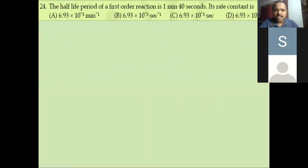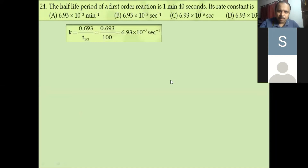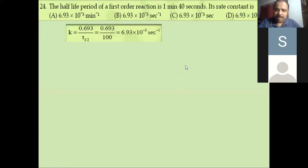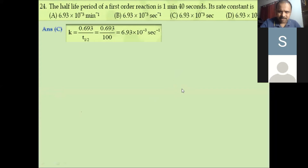The half-life period of a first-order reaction is 1 minute 40 seconds, which means 100 seconds. We need to find its rate constant. K is equal to 0.693 divided by T½. Substituting, 100 is 10 raised to 2 in the denominator, which goes to the numerator as 10 raised to minus 2. So the answer is 6.93 × 10⁻³. Option C.